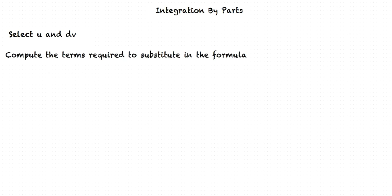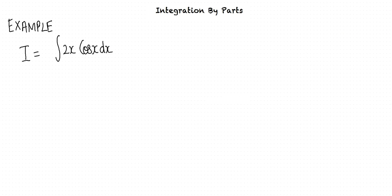Once we have selected the u and dv functions, the next step is to compute the terms required to substitute in the by-parts formula. After the first step, we have u and dv. We require v and du to substitute in the formula, and hence we are required to calculate these terms. Let us consider an example: evaluate the integral I equals the integral of 2x cos x dx.